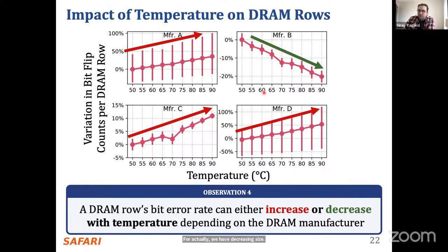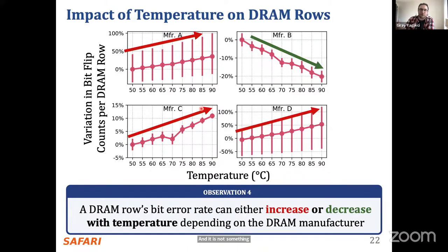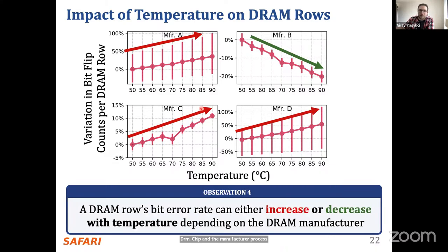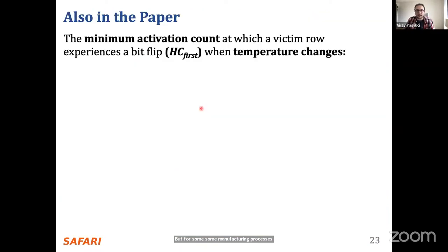So a DRAM row's bit error rate can either increase or decrease with temperature depending on the manufacturer. It's not necessarily specific to that manufacturer — it's about the design of the DRAM chip and the manufacturing process. DRAM manufacturers can change their manufacturing process or designs, and for some designs or processes you can see opposite trends. We have more temperature analysis in the paper, including the minimum activation count needed to induce row hammer bit flips, which can also increase or decrease with temperature.